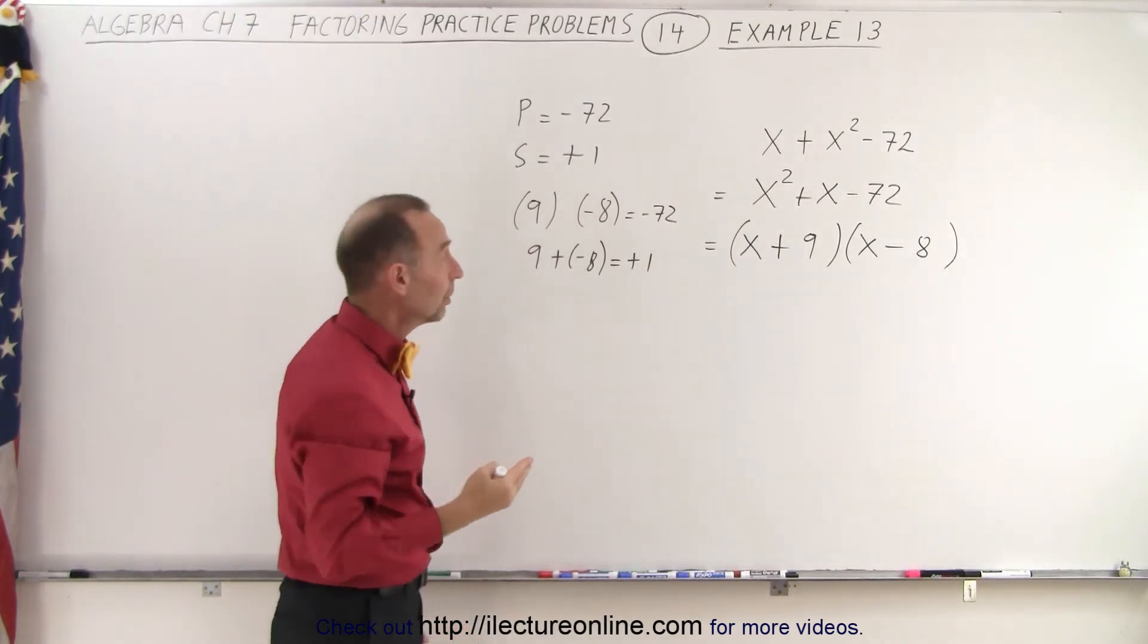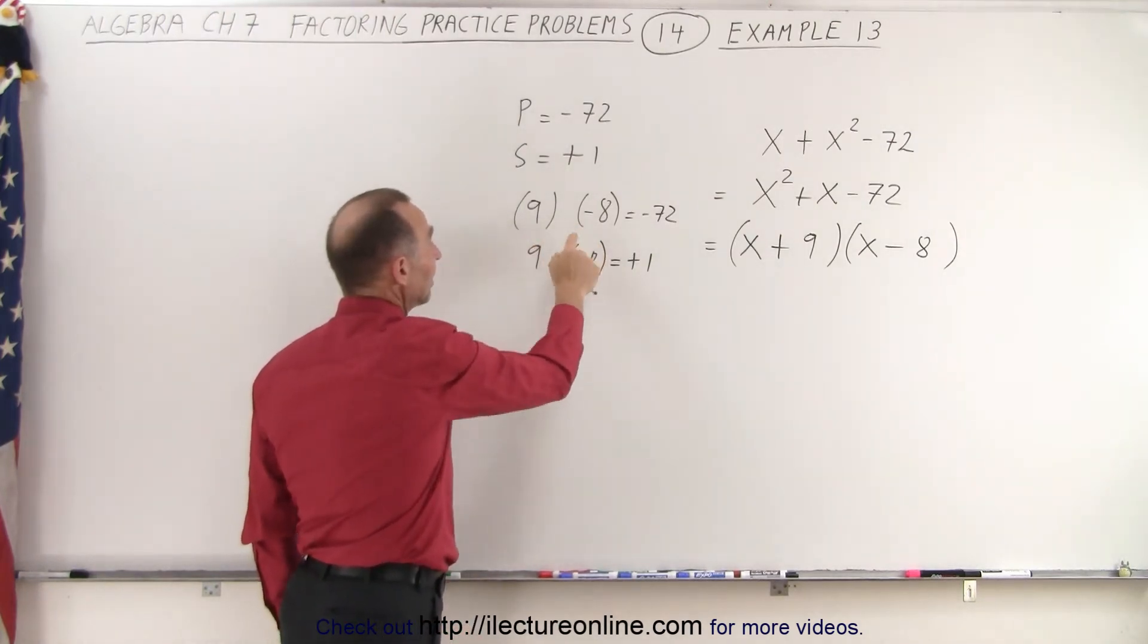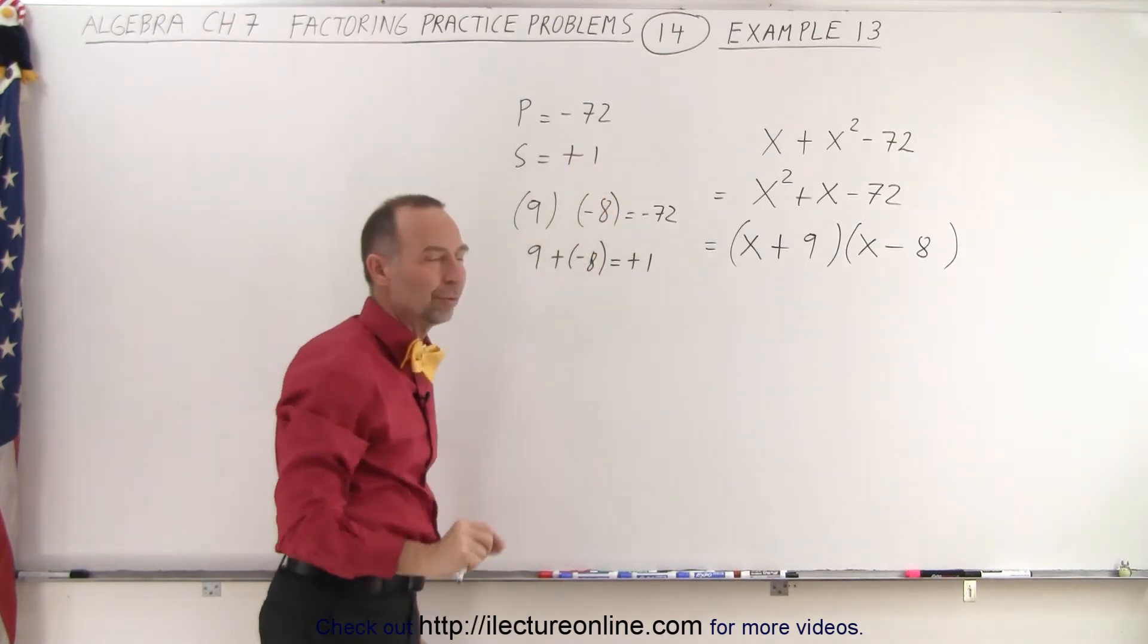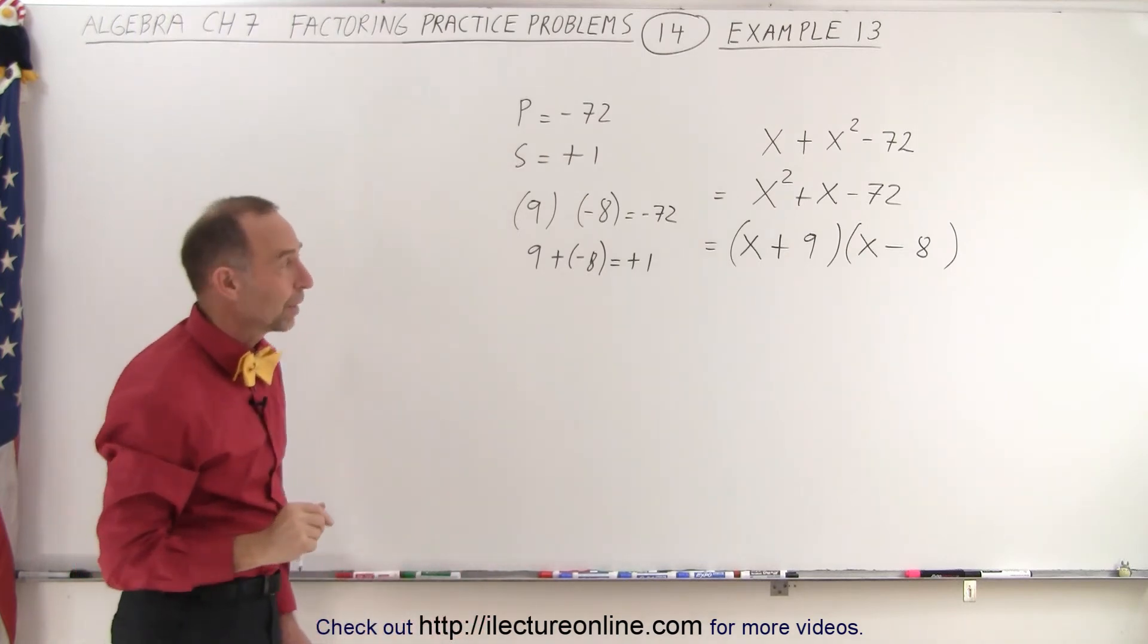9 times 8 is 72. 9 is 1 bigger than 8. If I make the 8 a negative and the 9 a positive, when I add them, I get plus 1. I get the middle term. I've got it correctly. Of course, we can use the FOIL method.